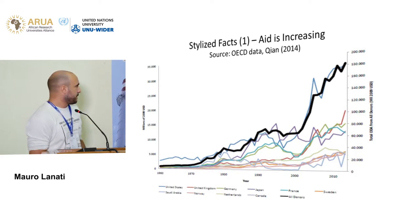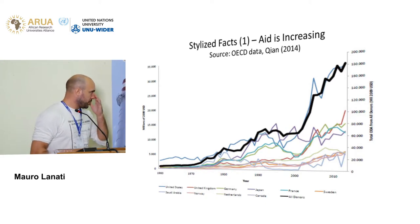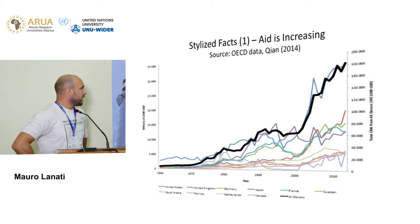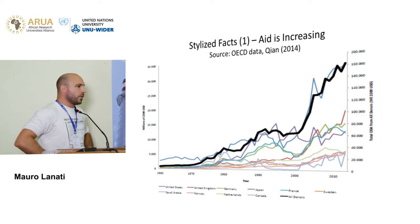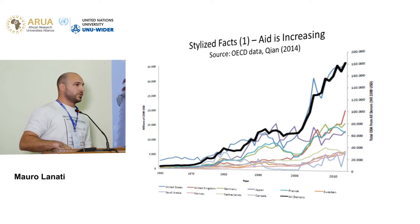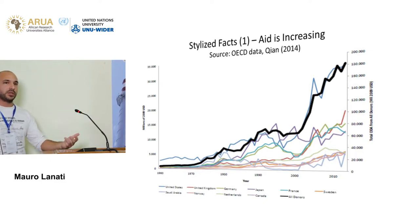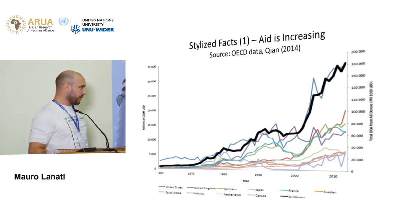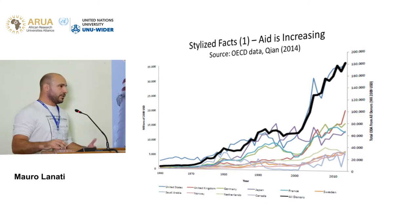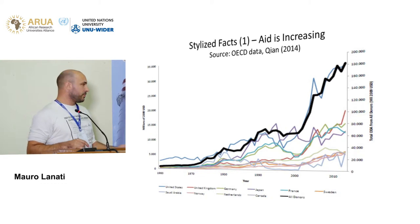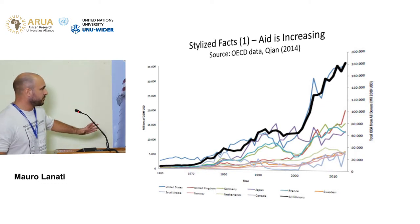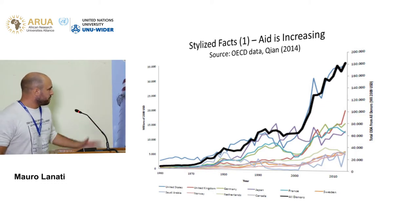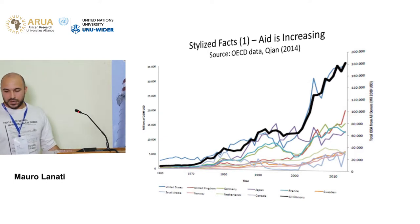The stylized facts from the foreign aid literature are quite useful for understanding the results I'm presenting. Regarding donor countries' commitment to give 0.7% of their GDP to developing economies in terms of foreign aid — even though very few countries met this requirement — we can see that foreign aid is increasing. Especially after the year 2000, we can see a sort of spike. So the first stylized fact is that foreign aid is increasing.